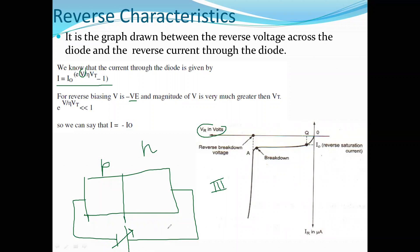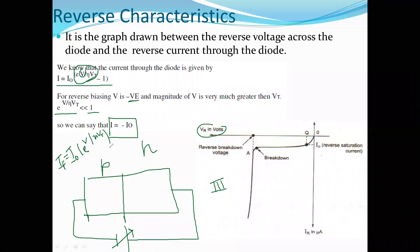In the equation, the voltage is negative because we are considering reverse voltage. The reverse characteristic plot is in the third quadrant, where voltage is negative and current is in the opposite direction to the forward current. The negative voltage makes the exponential term much less than 1, so we can approximate the current as equal to minus I0.